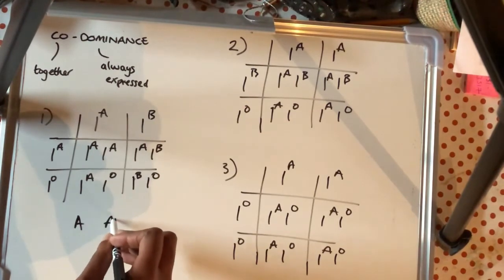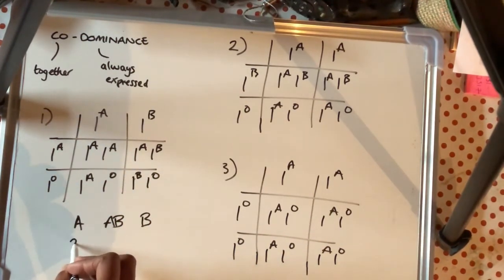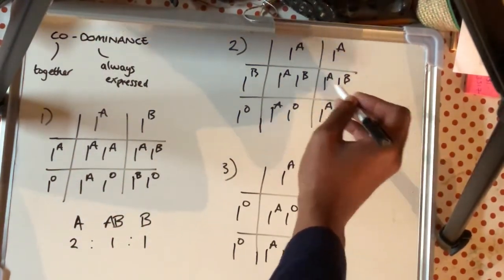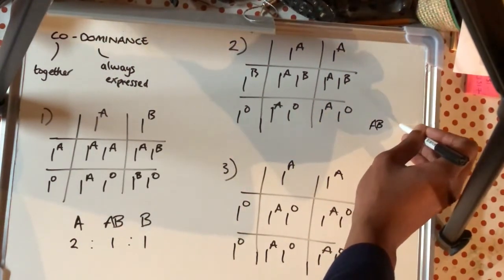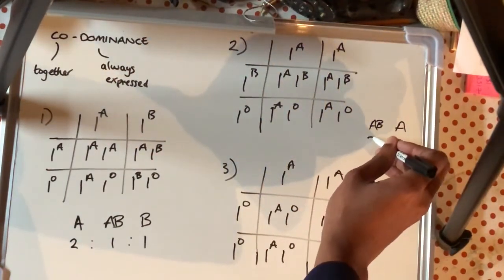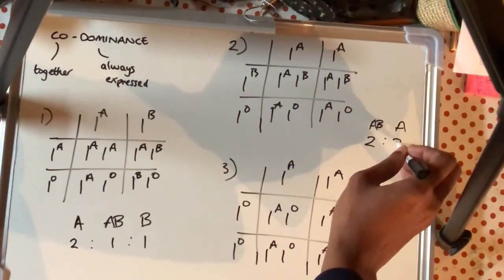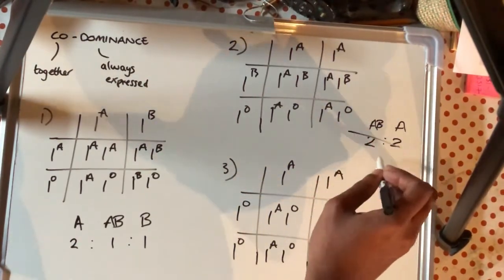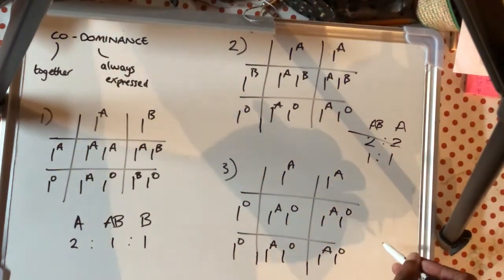So for the ratios now, we're looking at ratio of phenotypes that I'm telling you. So for our first question, the ratio of phenotypes would be 2 for A, 1 for AB and 1 for B. For our second one, we have 2 of our genotypes for AB and we have 2 which are AO. So if you're writing it from our Punnett square, it'd be 2 to 2. But of course, we always try to simplify. So it would be actually 1 to 1.